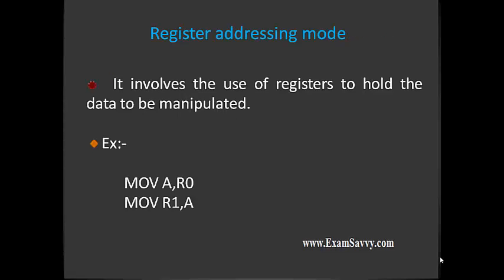The next is register addressing mode. Here the exchange of data happens between registers, but those two registers will not be of the same bank. Same bank registers are not supported in 8051. For example: MOV A, R0 — whatever the contents in R0, that will be moved to the accumulator. One more example with register R1. We need to take care that if any registers come from the same bank, it is not allowed. But the exchange will happen between registers, so it is called register addressing mode.